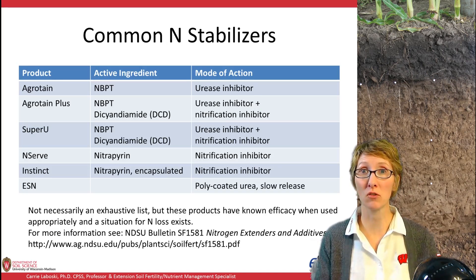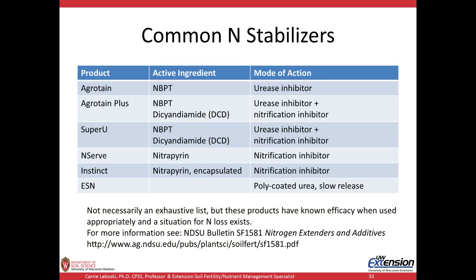Here are some common nitrogen stabilizers available in Wisconsin. The first product is Agrotain — the active ingredient is NBPT, a urease inhibitor. Then we have Agrotain Plus, which is Agrotain combined with dicyandiamide (DCD), a nitrification inhibitor — so here we have a dual mode of action product, inhibiting both urease and nitrification. SuperU is also made by Agrotain and also contains NBPT and DCD.